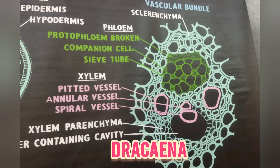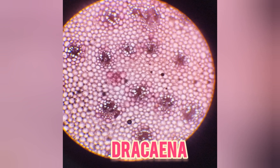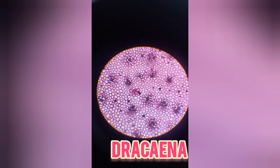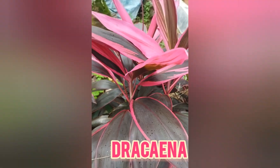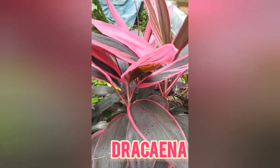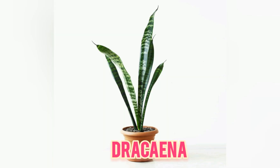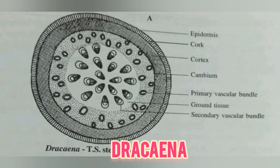The cambium then cuts off parenchyma cells on the inner side, pushing the newly formed vascular bundle towards the central region. After some time, the cambium again behaves abnormally and the position of the vascular bundle changes. The cambium initial which is destined to form the vascular bundle now forms vascular elements in the region where parenchyma was to be formed.